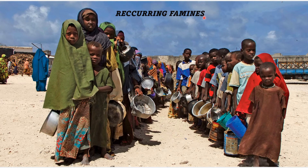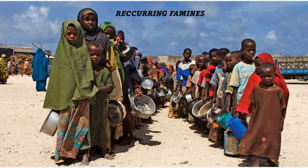Recurring famines, that is shortage of food, is another push factor. This is a picture taken from Africa where we can see little children waiting for food to arrive from the United Nations and other countries which help such nations during times of distress. Droughts and war all lead to famines and shortage of food, and little children and people are very badly affected by such conditions.